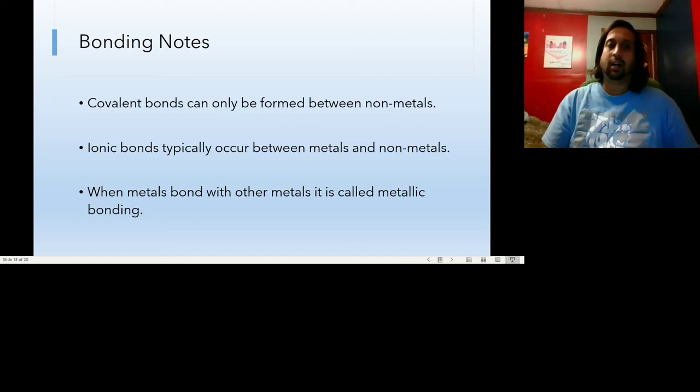So some noteworthy things here. Covalent bonds can only happen between nonmetals. So if you look at the periodic table and you see that the two elements that you're looking at are both nonmetals and they've bonded, you can pretty much bet your bottom dollar that a covalent bond has occurred. If one of those is a metal and the other is a nonmetal, typically what you've had was an ionic bond. And we're not going to go into too much detail on this, but metals can also bond with other metals. And that is called, yeah, this is really imaginative, but they call it a metallic bond. We're going to keep the conversation to covalent and ionic bonds for the moment.